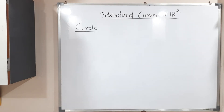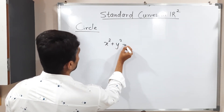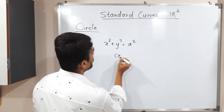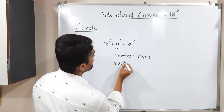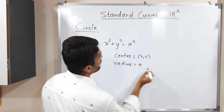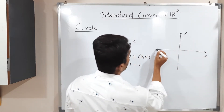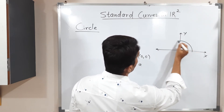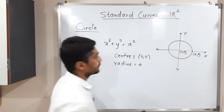We will go for circle. The standard equation of a circle is x² + y² = a². This is the equation of a circle with center at the origin, which is (0, 0), and its radius is a. So if you draw the circle, the center is at the origin, radius is a, and the point (a, 0) lies on the circle.